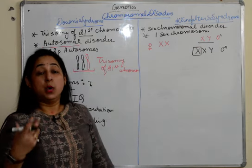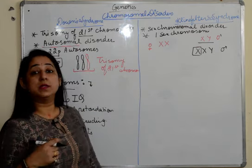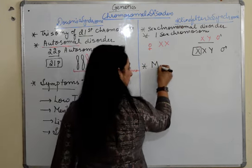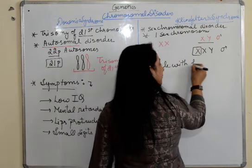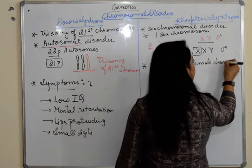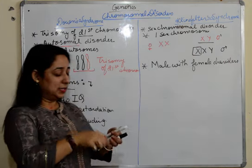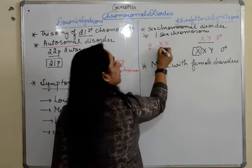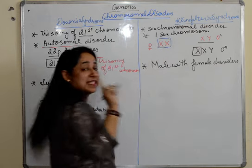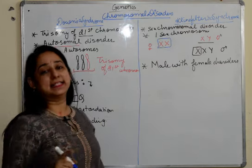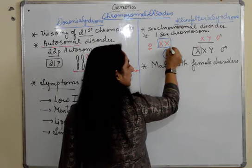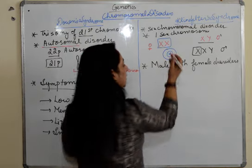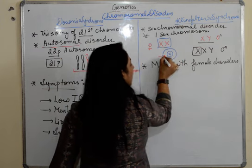How does it appear? It is a male with female characters. In a normal female, both X chromosomes are not active — only one X is active. If you observe female cells, one X is active and the other X forms a darkly stained body which is known as the bar body.